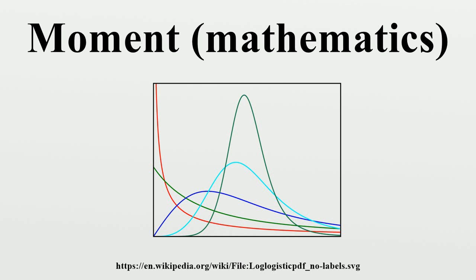It can be shown that the expected value of the raw sample moment is equal to the kth raw moment of the population, if that moment exists. For any sample size n, it is thus an unbiased estimator. This contrasts with the situation for central moments, whose computation uses up a degree of freedom by using the sample mean.